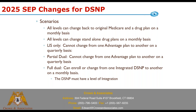All levels can change back to original Medicare and a drug plan on a monthly basis, and all levels can change standalone drug plans on a monthly basis. If somebody is LIS-only, they cannot change from one advantage plan to another — the quarterly is gone. Same for partial duals. An LIS or partial dual will not be eligible to switch during the year from one advantage plan to another. A full dual can enroll or change from one integrated D-SNP to another on a monthly basis.